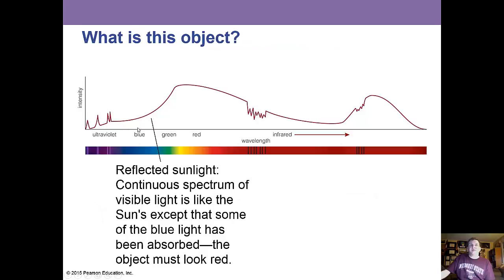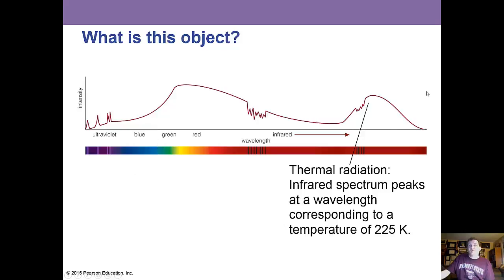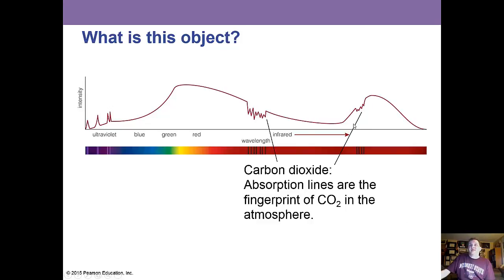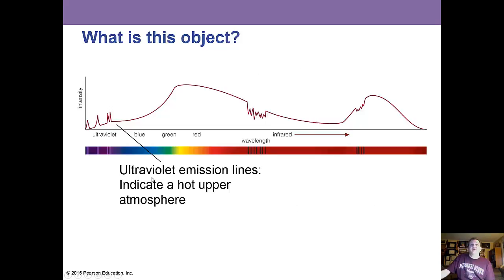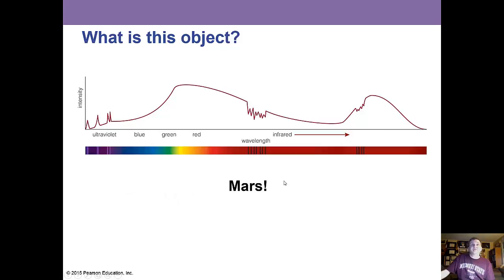In this part we see reflected sunlight — a continuous spectrum of visible light like the sun, except that some of the blue light has been absorbed, so the object looks red. We also have thermal radiation: the infrared spectrum peaks at a wavelength corresponding to a temperature of 225 Kelvin. Carbon dioxide absorption lines are a fingerprint for CO2. There are also ultraviolet emission lines indicating a hot upper atmosphere. This object is Mars.